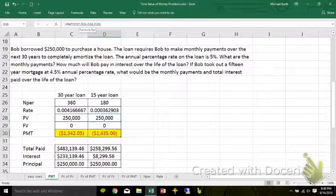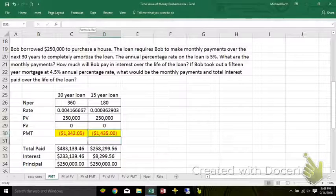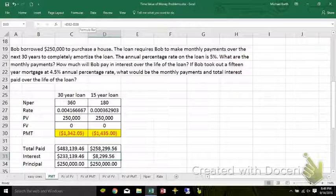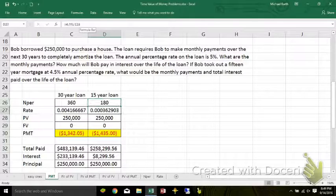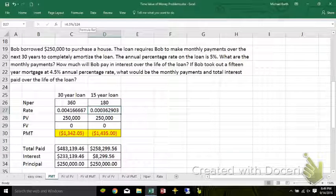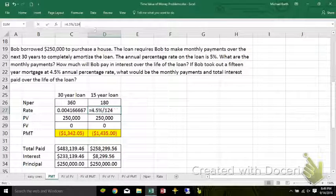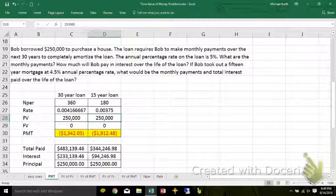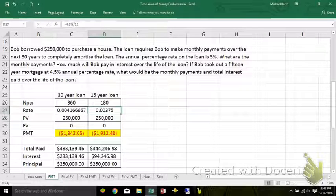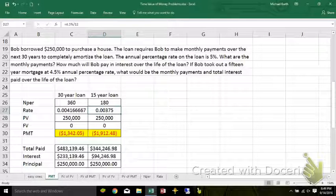But you pay a lot less interest. Okay. 180 payments, 4.5%. Oh, that's where that extra 4 went. There we go. So, 4.5% divided by 12 will give you the monthly interest rate.